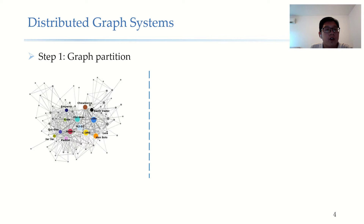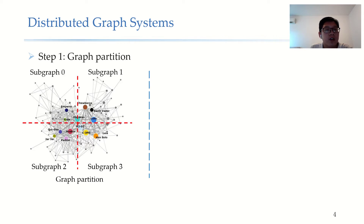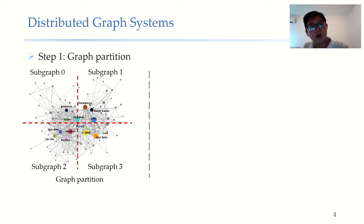For distributed graphs, they first need to partition the big graph into several small subgraphs. According to the scale of the cluster, for example, if we have 4 machines in the cluster, we need to partition this big graph into 4 subgraphs. We next review some commonly used graph partition algorithms in distributed graph systems.